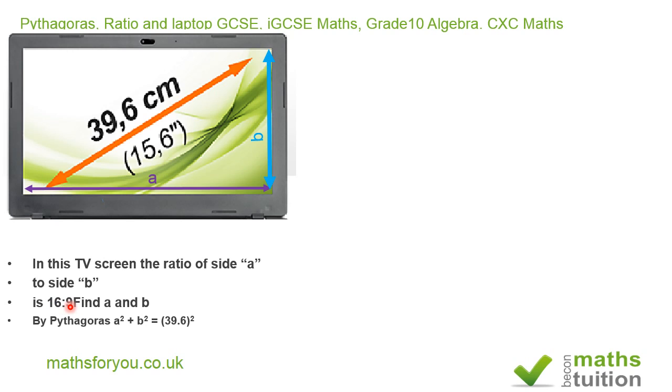And because this ratio is 16 to 9, we can write this as a/b = 16/9. If we then cross multiply we have that a = 16b/9.